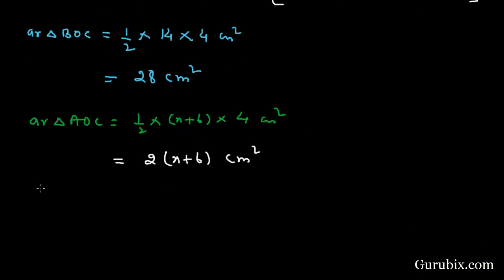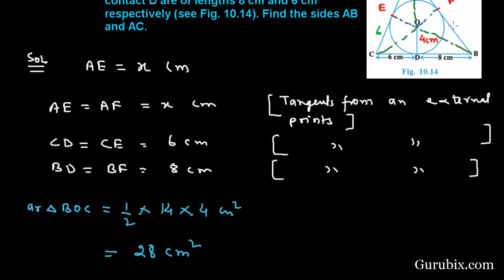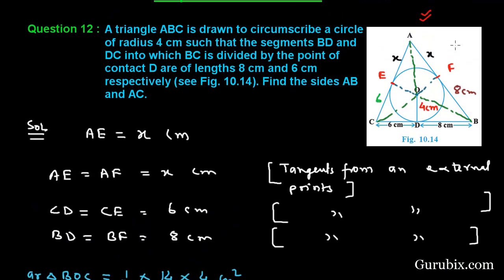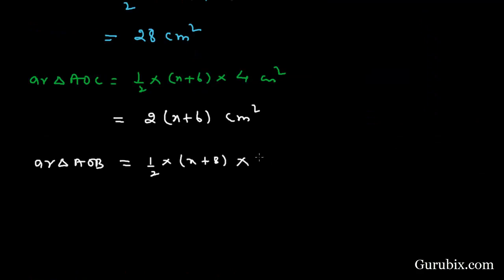Now we shall find the area of triangle AOB. That will be one-half times AB times the radius. Since BF equals 8 centimeters and AF equals X, AB will be X plus 8. The radius is 4 centimeters, so the area equals half times (X plus 8) times 4, which gives 2 times (X plus 8) square centimeters.